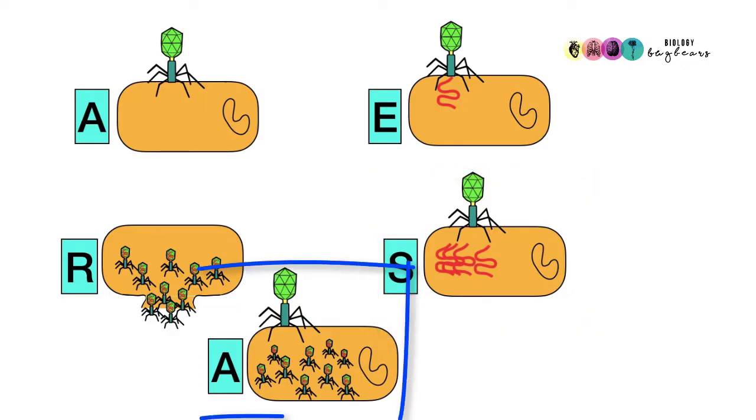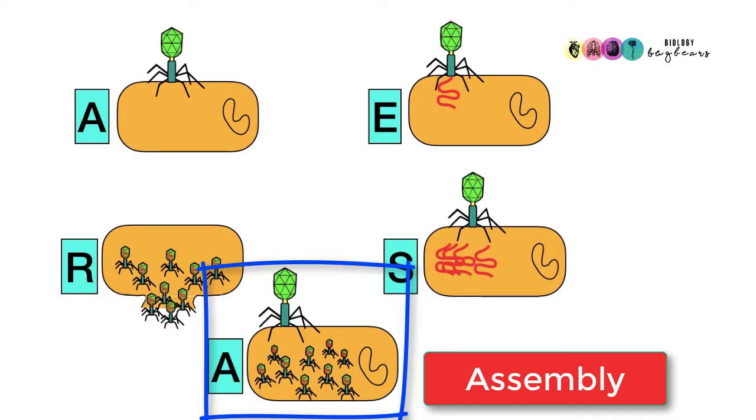The next stage is assembly. All of the components—all of the protein coats, the capsids—are now made, as are the nucleic acids, and basically they're now put together to form new viruses.